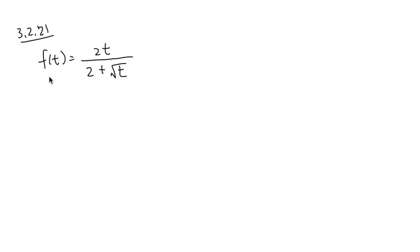3.2.21, our function is f of t equals 2t over 2 plus square root of t. And we are trying to find the derivative of this function.